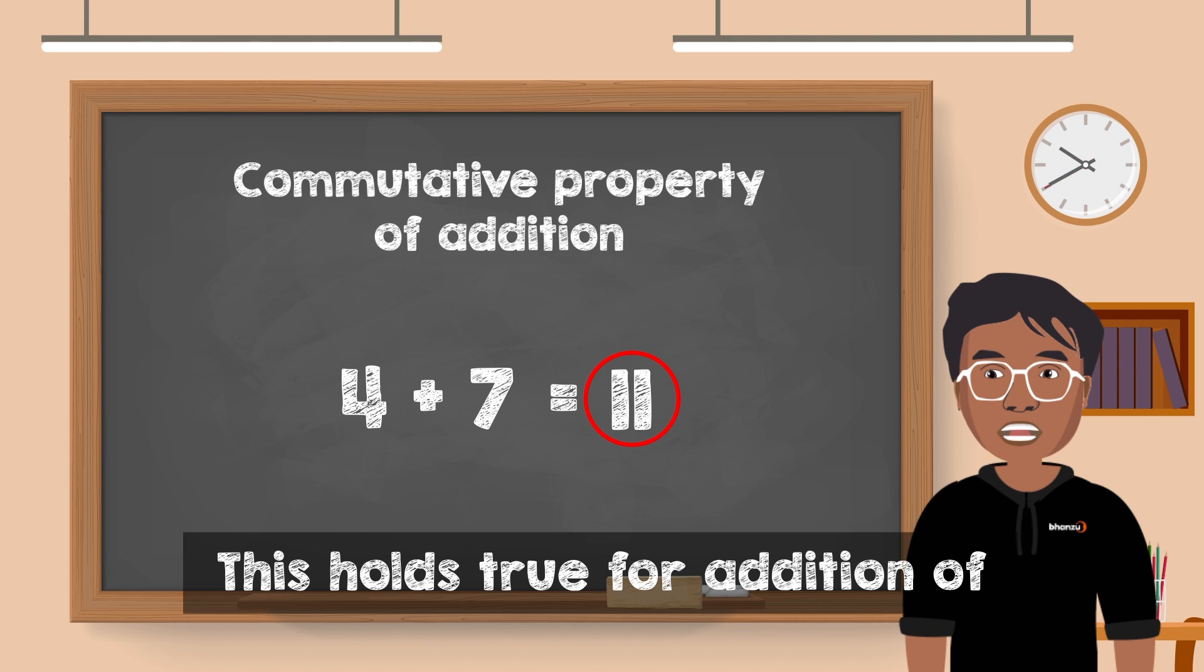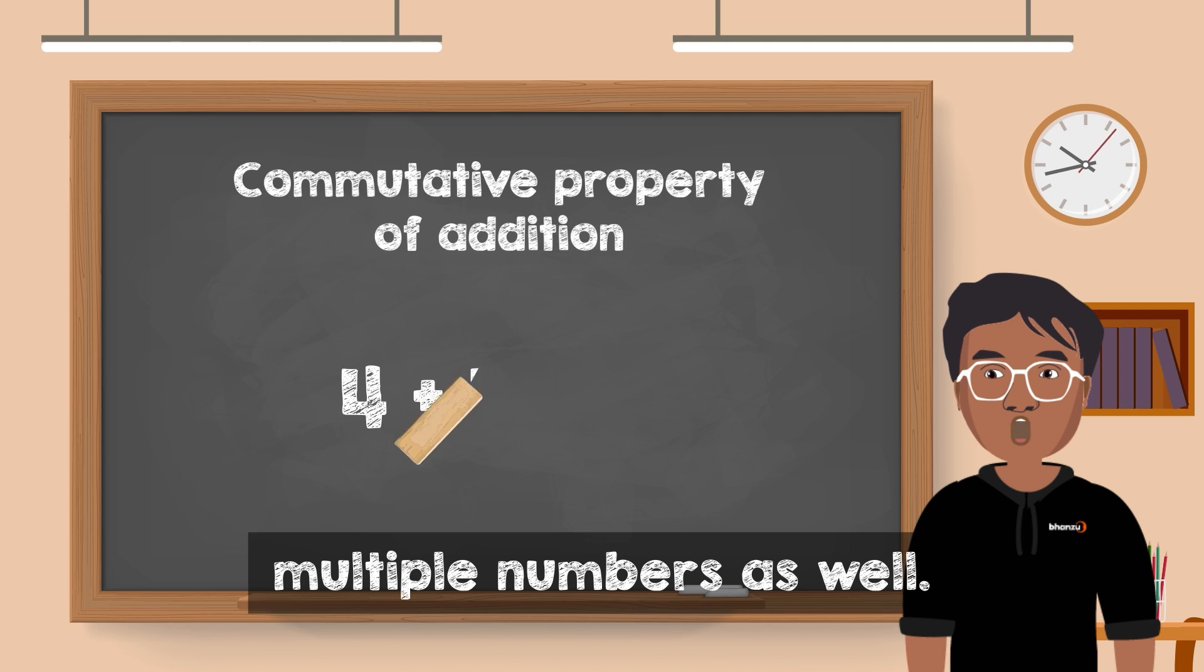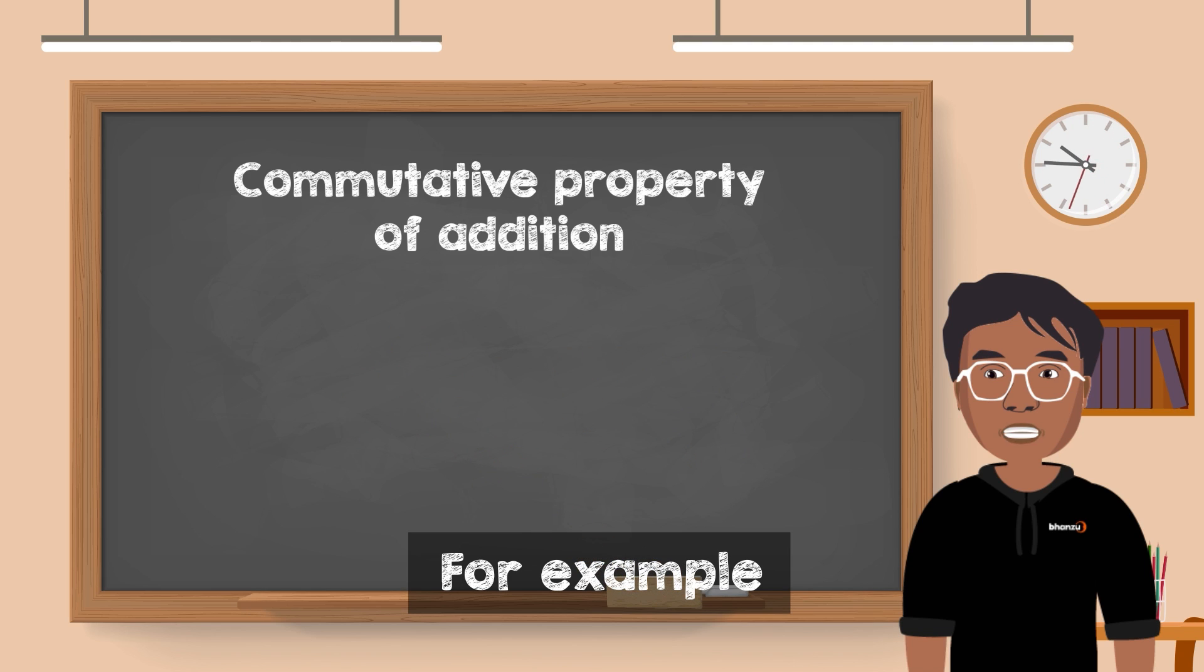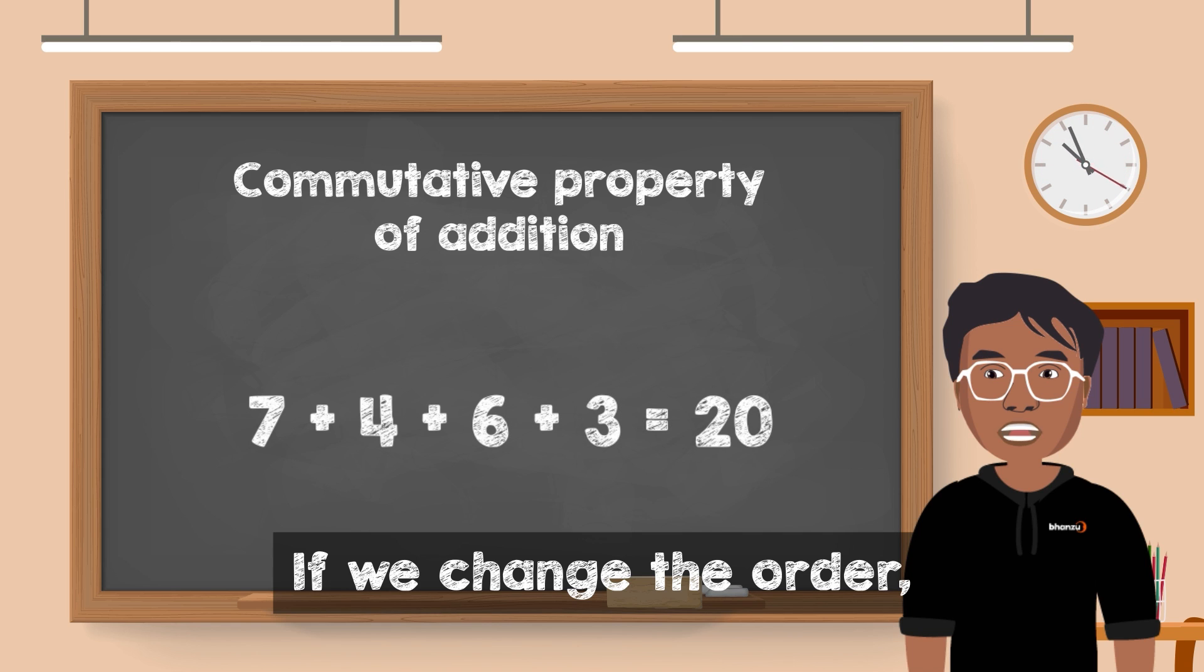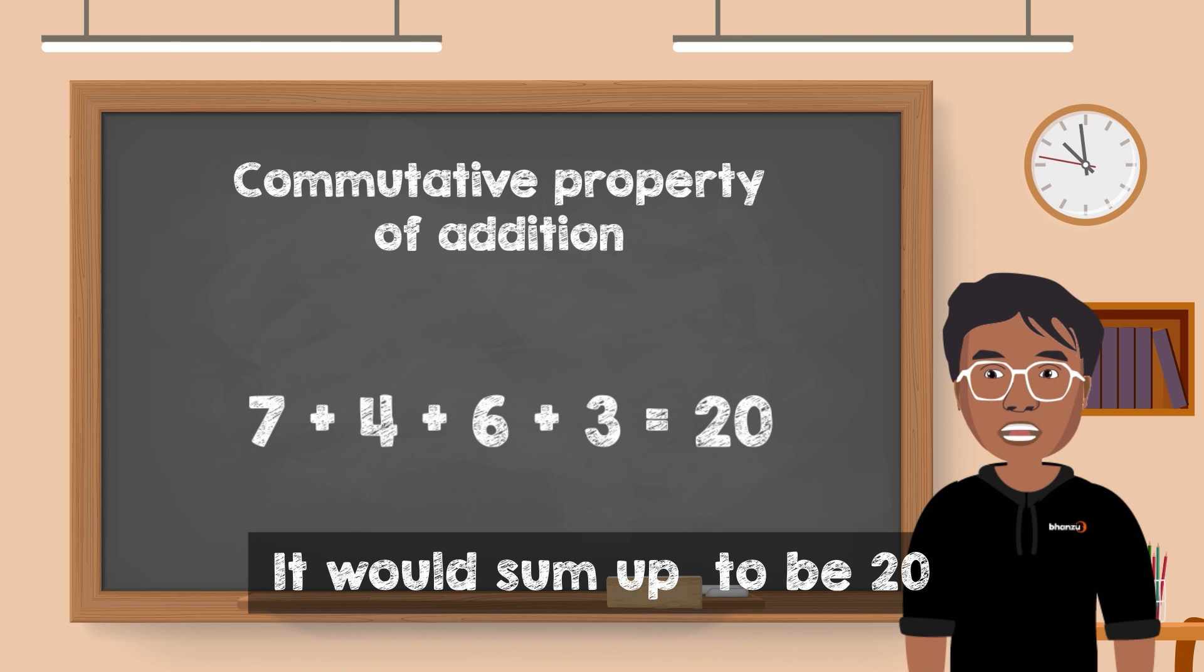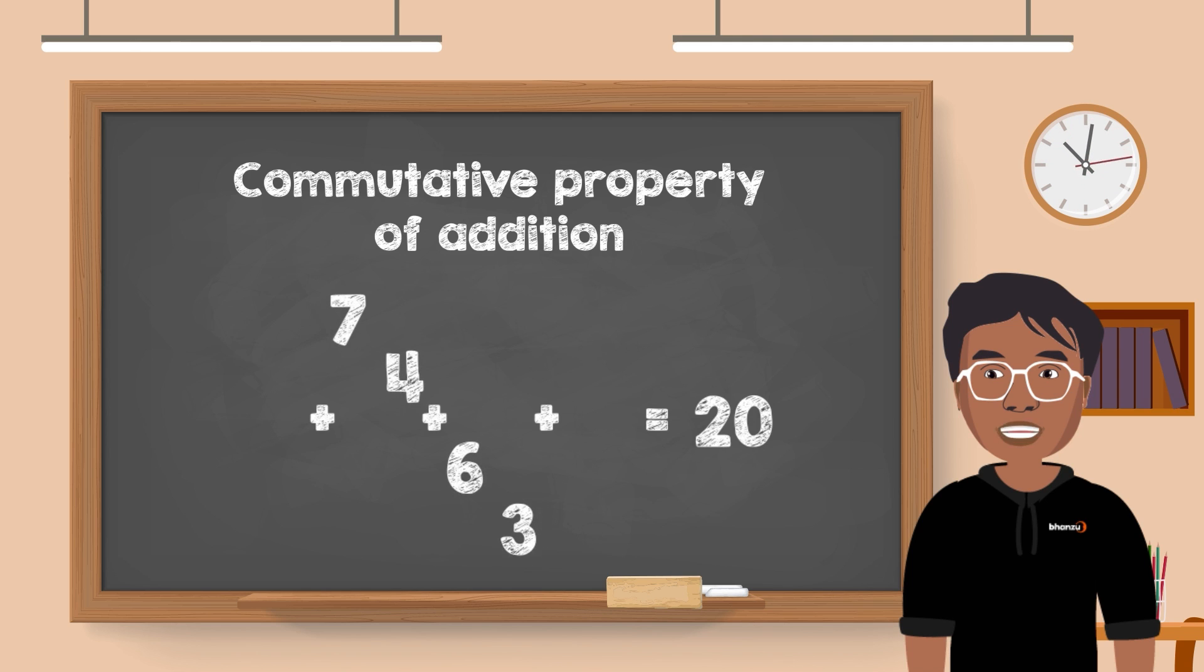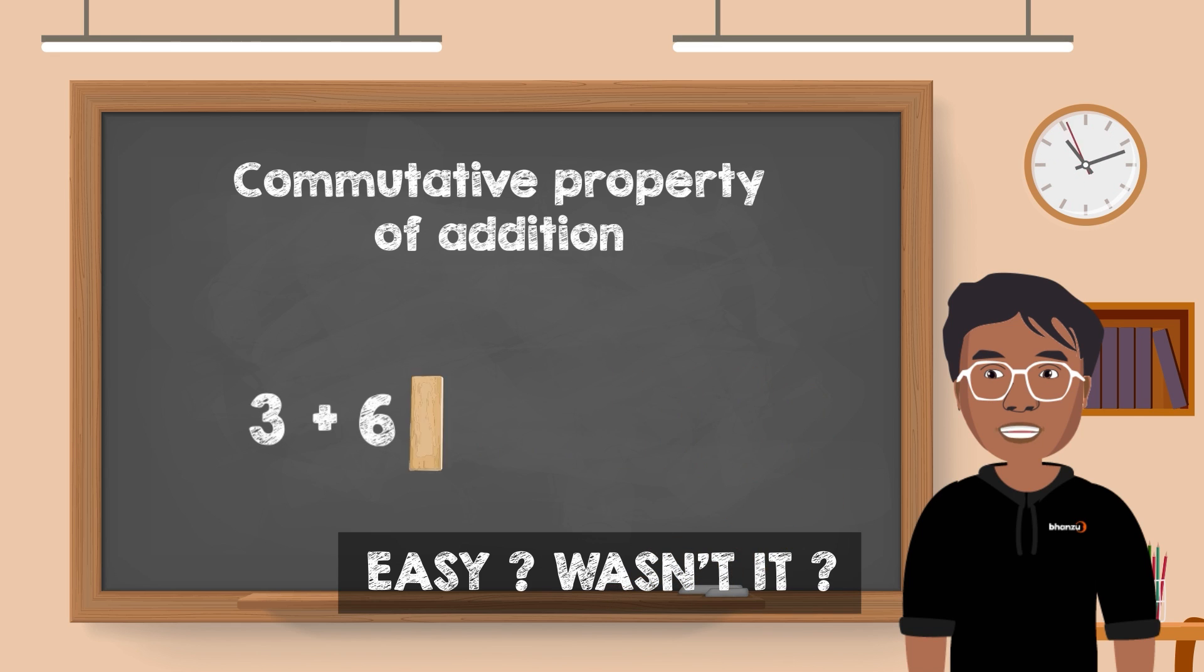This holds true for addition of multiple numbers as well. For example, 7 plus 4 plus 6 plus 3 equals to 20. If we change the order, it would sum up to be 20. 3 plus 6 plus 4 plus 7 equals to 20. Easy, wasn't it?